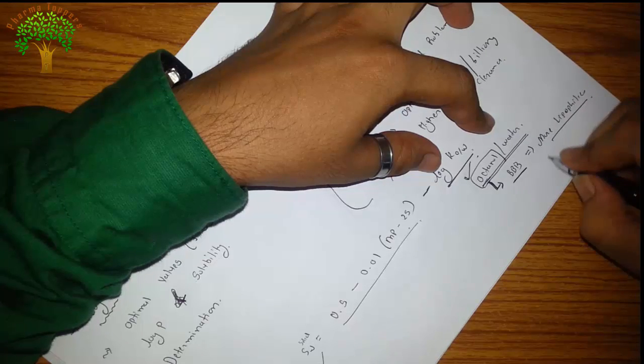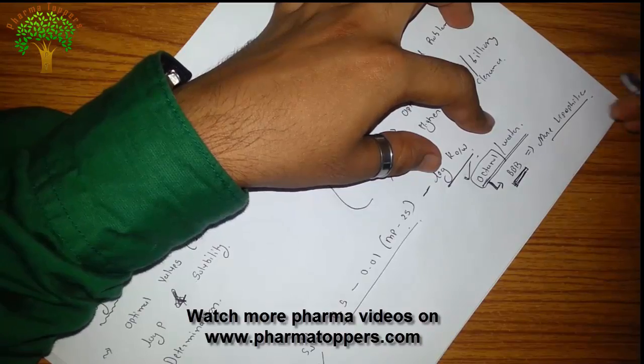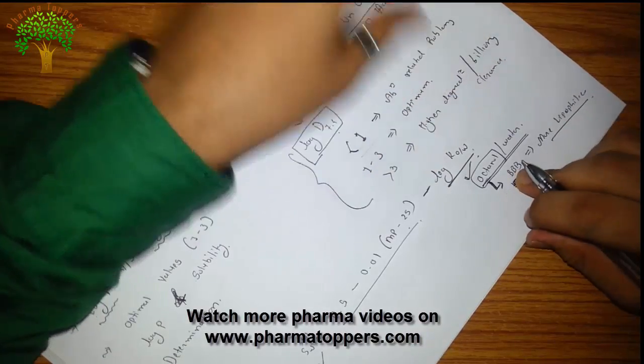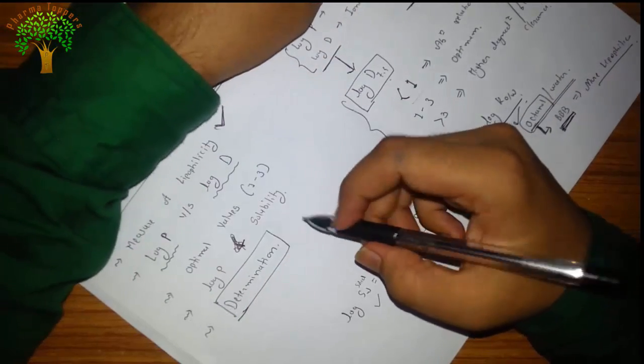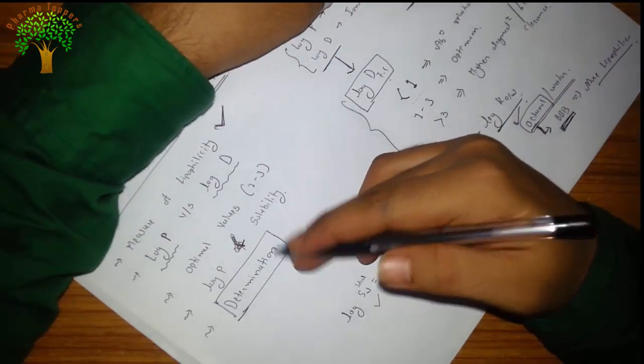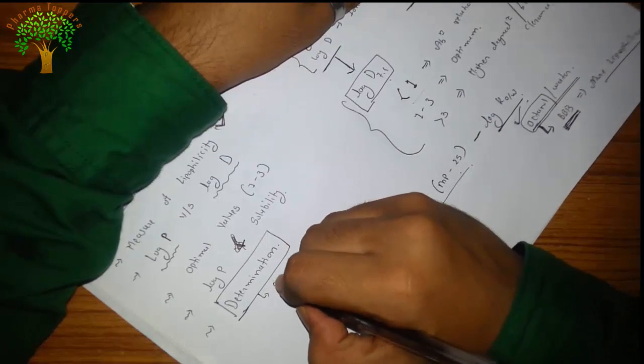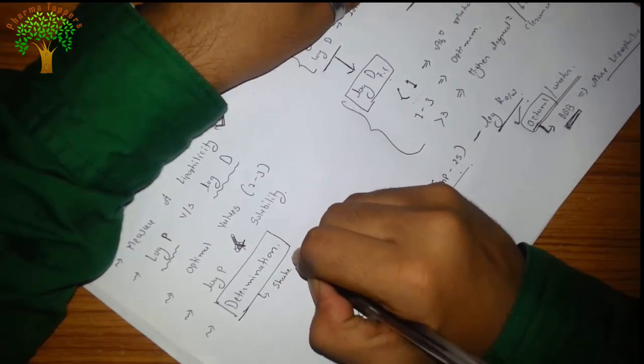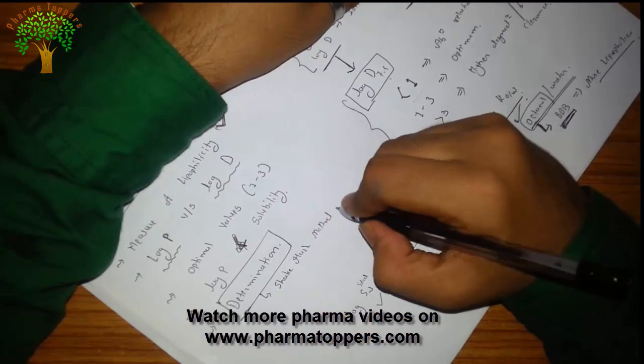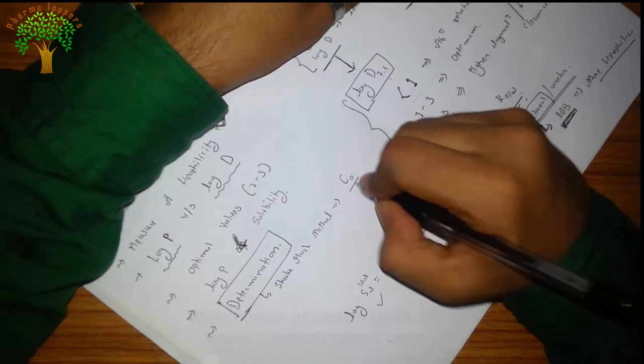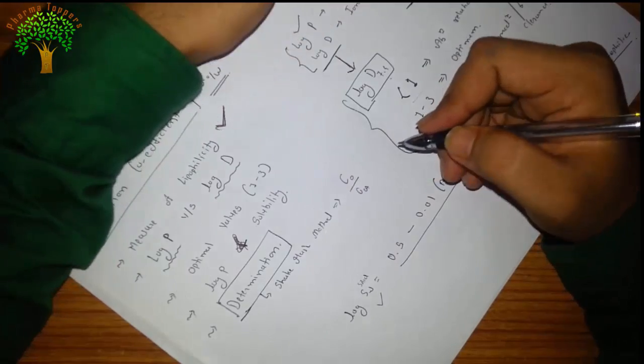And the last part: how we can go for the determination? The most common and the most simple laboratory method is the shake flask method. In this method, the concentration in oil phase upon concentration in aqueous phase is divided and you can get the partition coefficient.